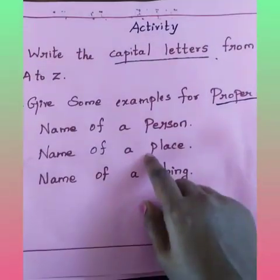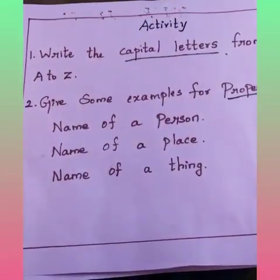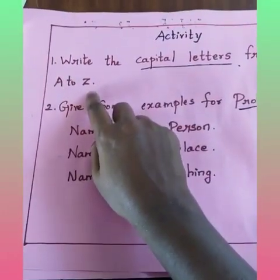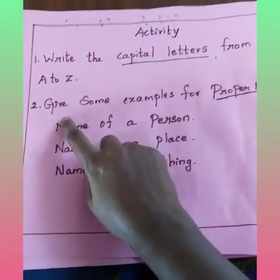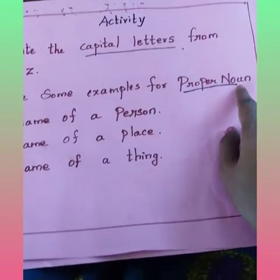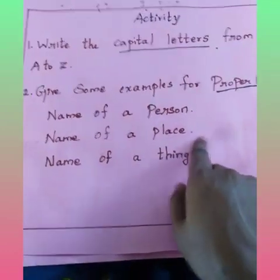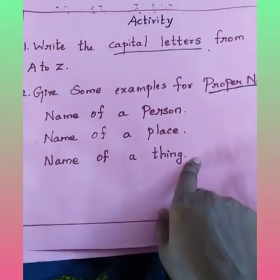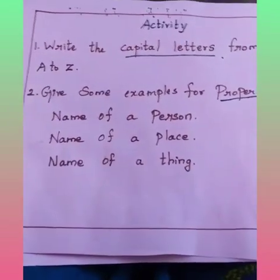For today's class, you have to do two activities. First, you have to write the capital letters from A to Z. Second, you have to give some examples for proper noun — that is, you want to write the name of a person, name of a place, and name of a thing. Ok students, thank you. We can meet in our next class. Bye-bye.